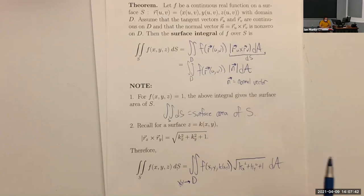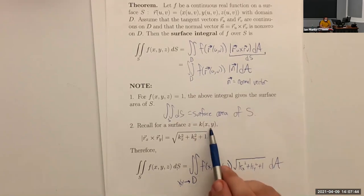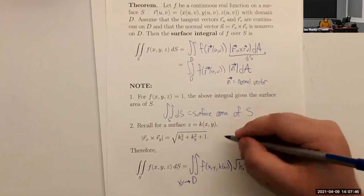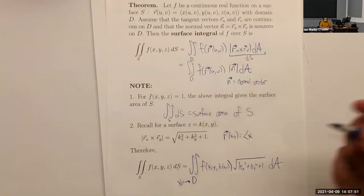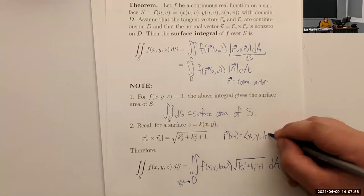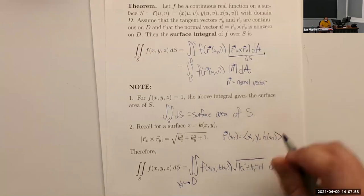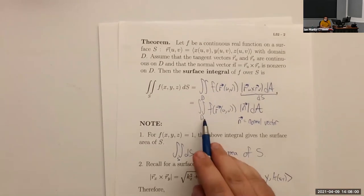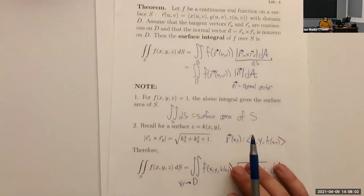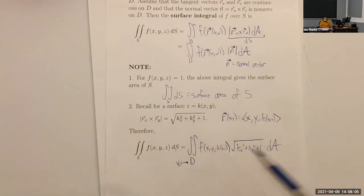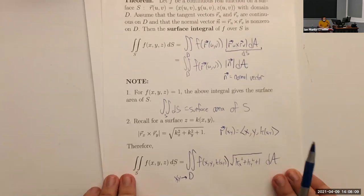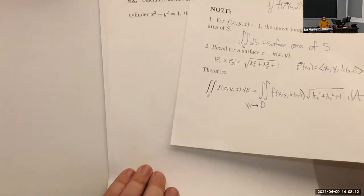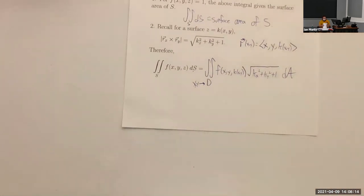In that case, x and y are the parameters and they live in domain D, just like u and v were parameters before. R(x,y) has x for x, y for y, and k(x,y) for z. That's enough theory — let's go ahead and actually compute one of these and get our hands dirty.